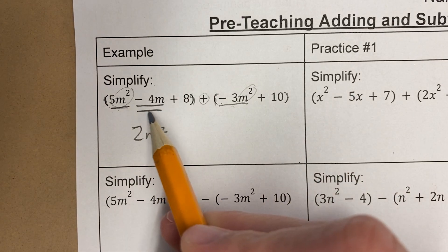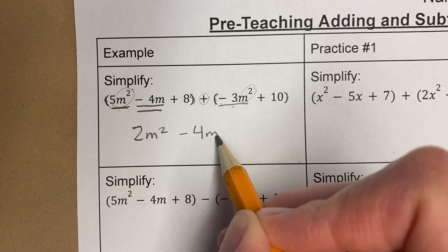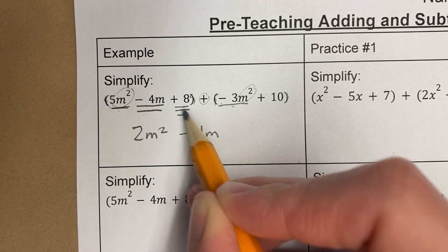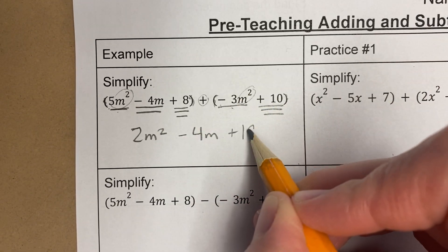Now I'm looking for another term with an m. There's no other terms. Just bring it down. And then I have positive 8 and positive 10. So that's 8 plus 10. That's 18.